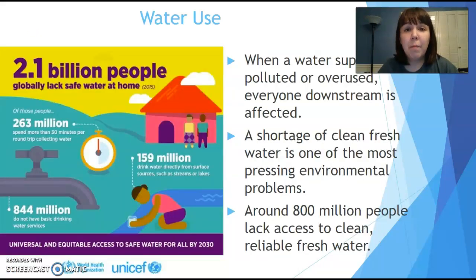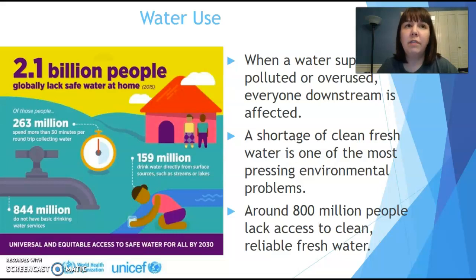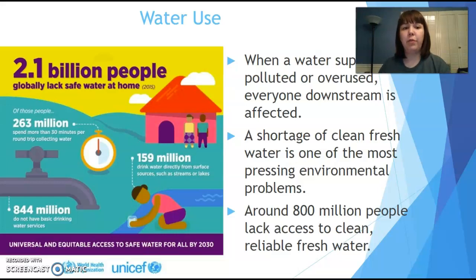When the water supply is used up, polluted, or no longer useful, everyone is affected. There are about two billion people who lack safe water, and 800 million people do not have reliable fresh water to begin with. A lot of time is spent finding and gathering water for families. If we can find ways to protect our water resources — both the amount and the cleanliness — we can go a long way toward solving poverty and economic instability.